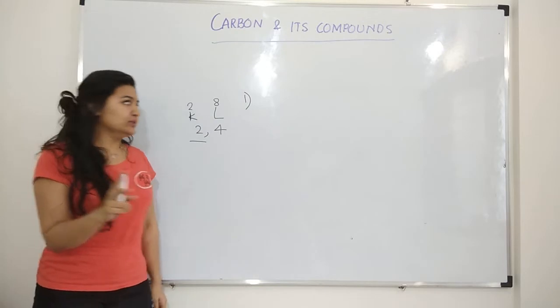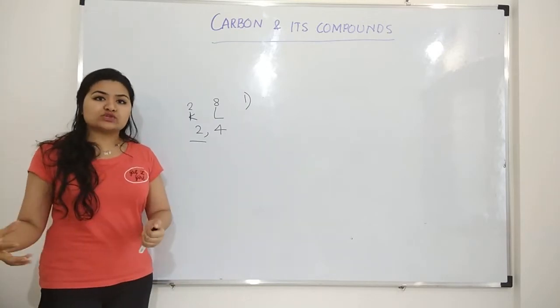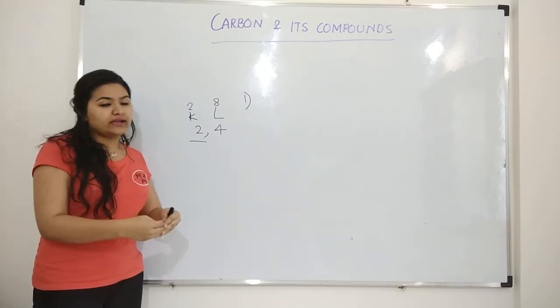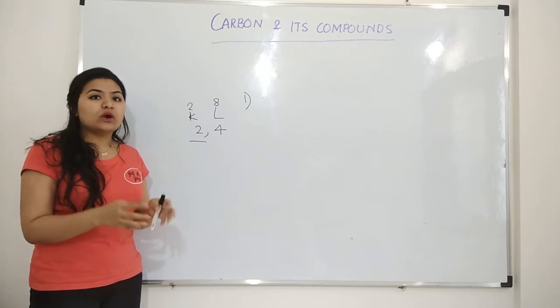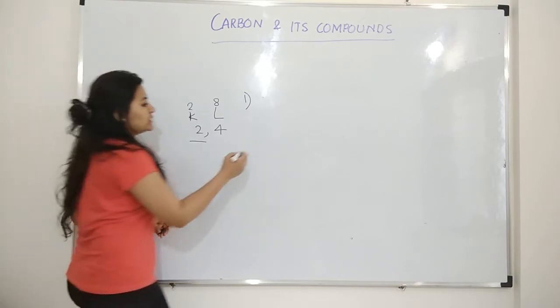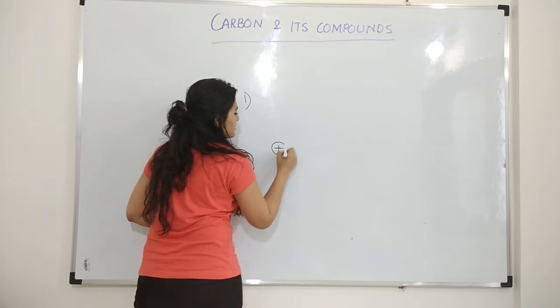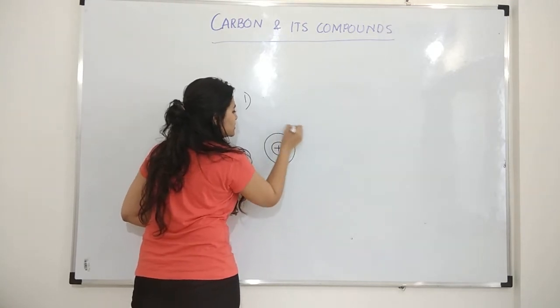Now two major things I am going to tell you. For an atom to remove electrons, there is an energy required. It is called as ionization energy. What energy? Ionization energy. Now here, this is carbon with two shells.